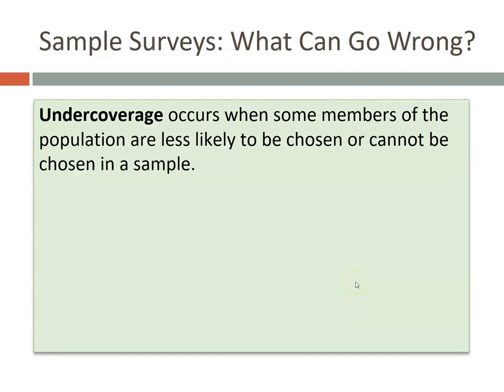One thing that can happen is under coverage. This means that some members of the population are less likely to be chosen, or cannot be chosen, in a sample. An example would be sending out an email survey to everyone in the country — not everyone has email, so you're excluding members of the population who don't, who may differ from those who do.